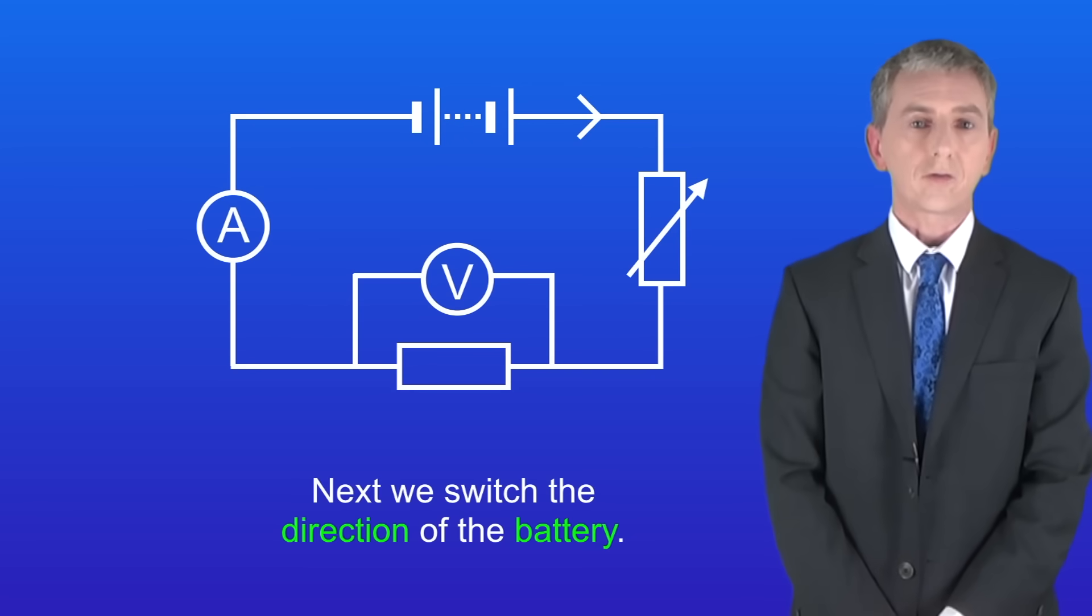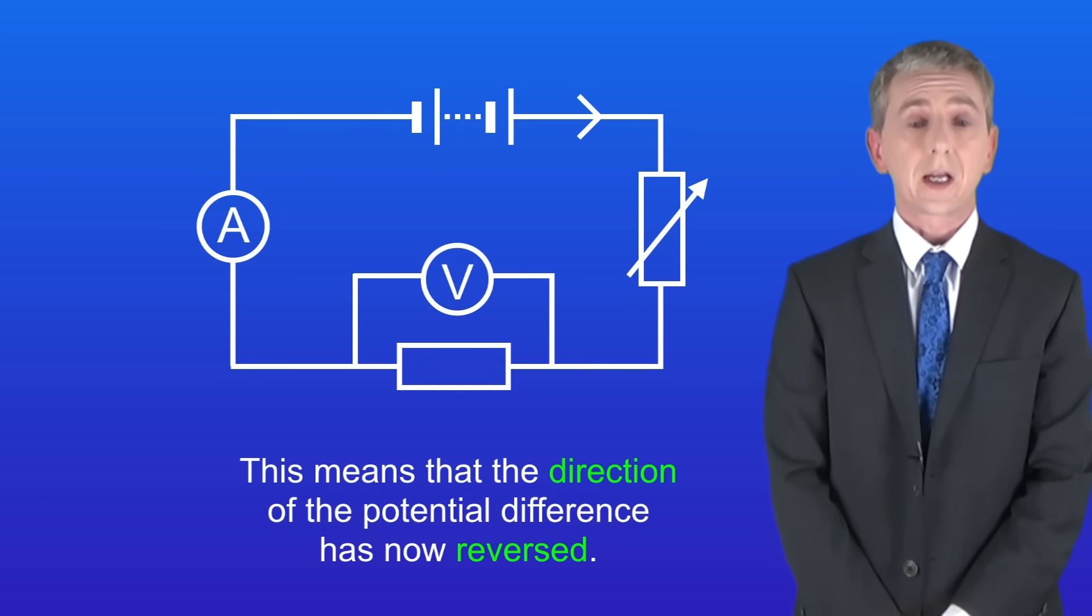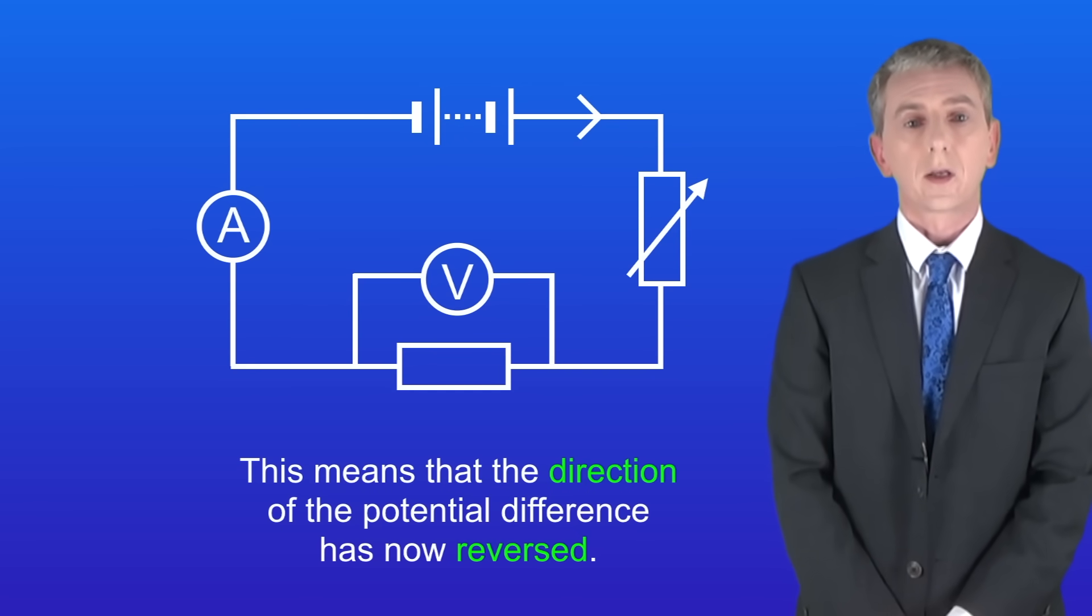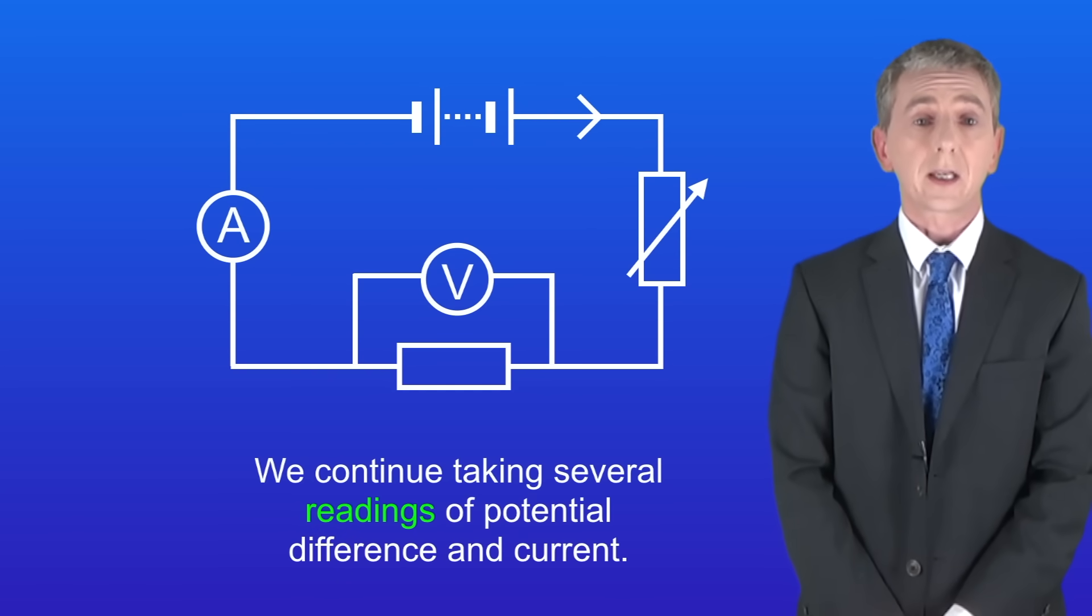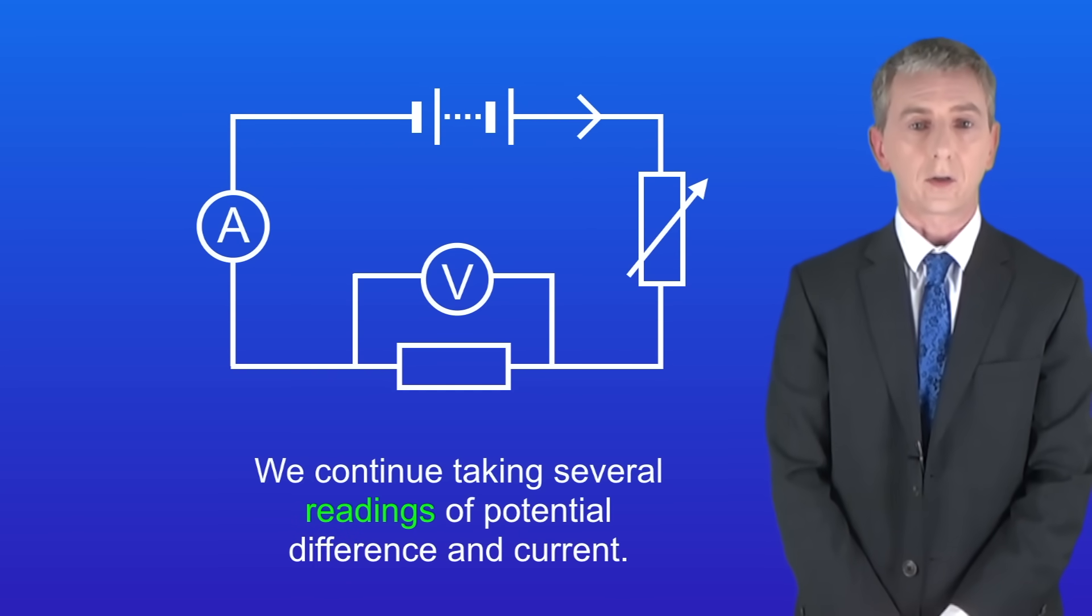Next we switch the direction of the battery. This means that the direction of the potential difference has now reversed. Both the voltmeter and the ammeter should now have negative values. And just like before we continue taking several readings of potential difference and current.